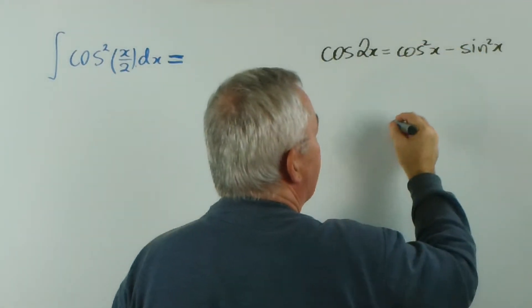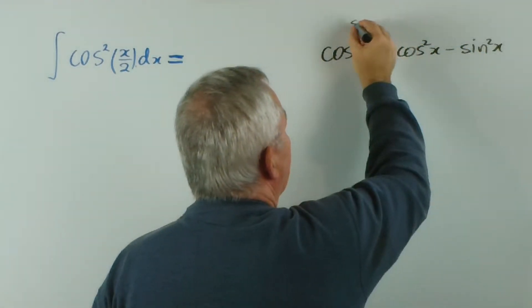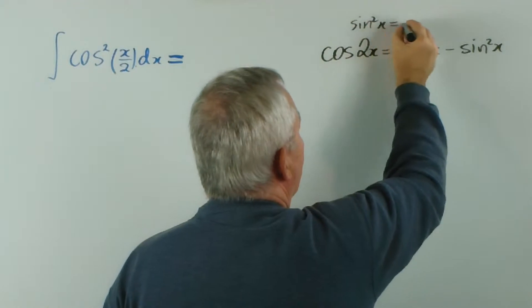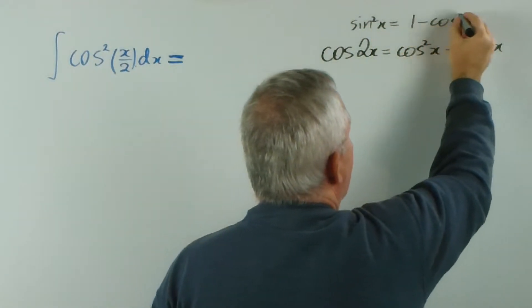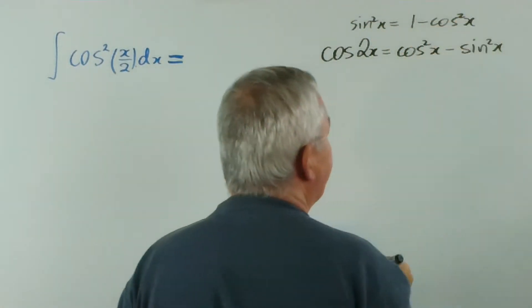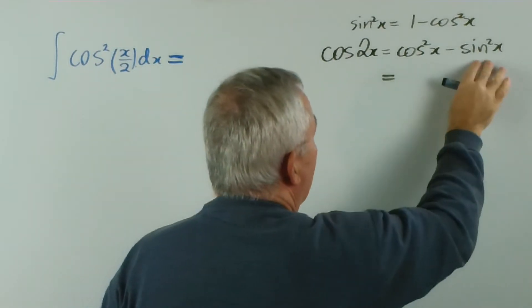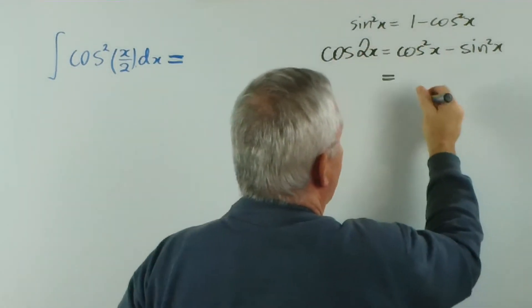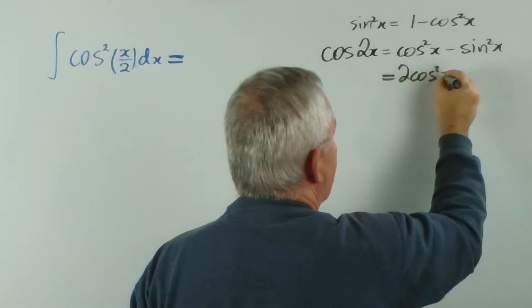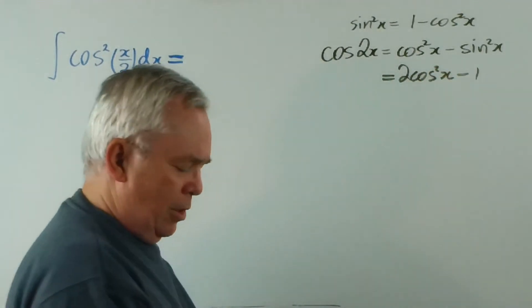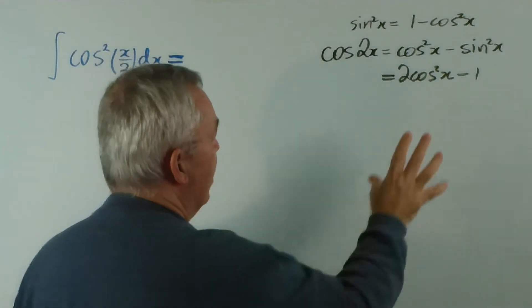And because sin squared x is 1 minus cos squared x from a separate identity, which we can substitute, we would end up with 2 cos squared x minus 1. I'm just assuming you're familiar with that sort of algebra.